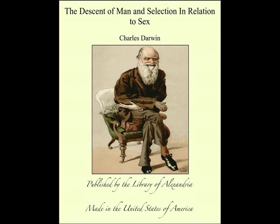Bateman was based at the John Innes Centre in Norwich, England, an independent research institute founded in 1910. The first director was William Bateson, a giant in the field of genetics who actually coined the term genetics. Bateson founded the Journal of Genetics, but it was later hijacked by another famous member of staff, J.B.S. Haldane, who turned communist and retreated to India.